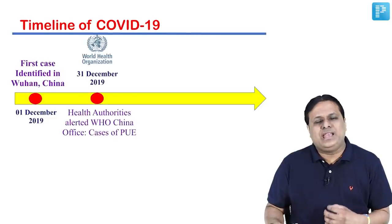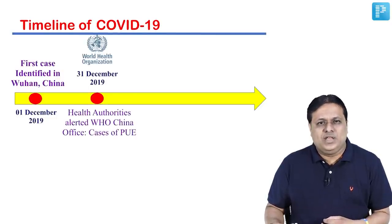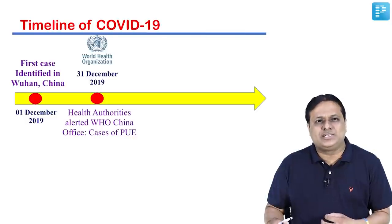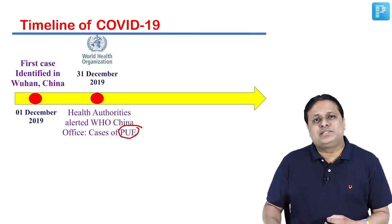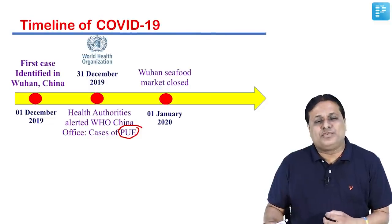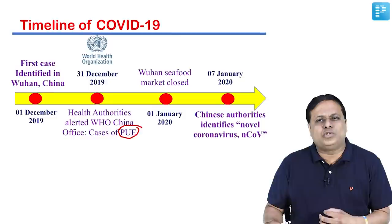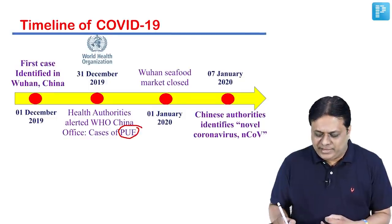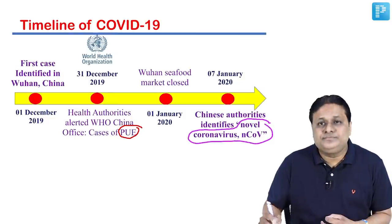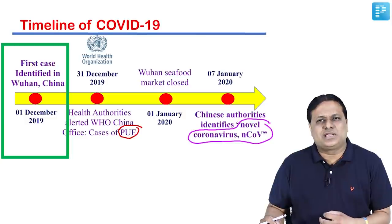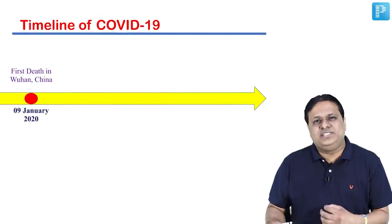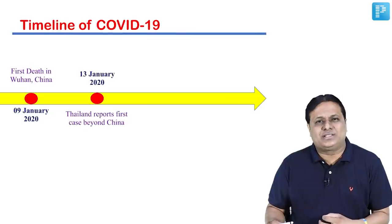Health authorities of the WHO China country office were alerted about this disease on 31st December 2019 as cases of pneumonia of unknown etiology — PUE. Subsequently, Wuhan seafood market was closed on 1st January, thinking it could be the hotspot where the virus originated. On 7th January 2020, WHO identified this as a novel coronavirus. China also reported its first death due to this disease in January.